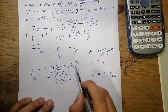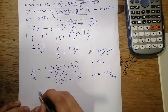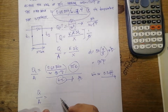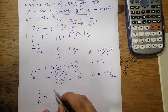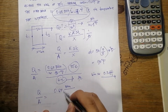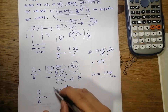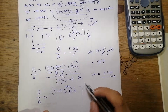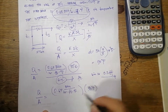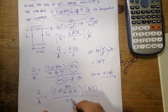Now the units are consistent, so we substitute the values. Q over A is equal to 0.65 BTU per hour per foot per degree Fahrenheit, multiplied by 90 degrees Fahrenheit, all divided by 0.5 feet.